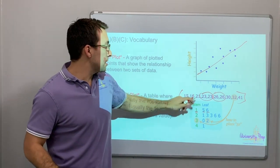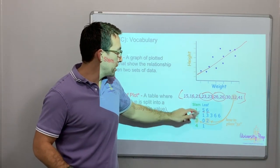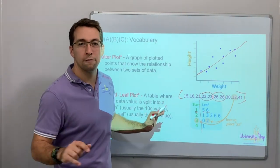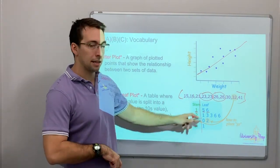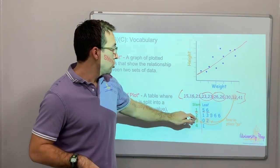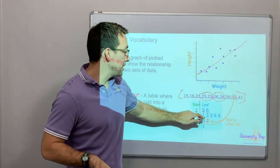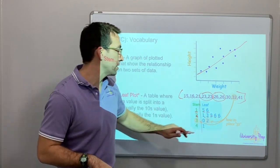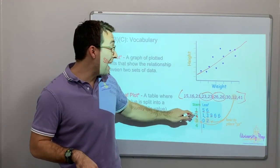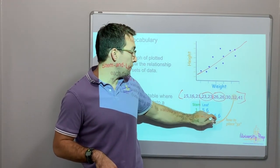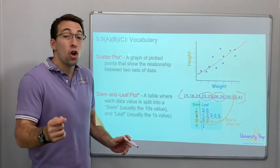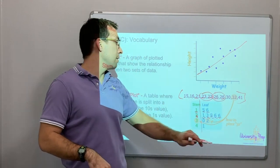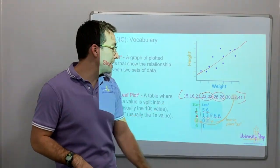The stem — right here — is the tens place. Sometimes you can do it as the hundreds place, but generally for your STAAR test it's going to be tens place and ones place. So 21, 23, 23, 26, 26 — there are five numbers that are all in the 20's from our data set. There are two 23's and two 26's.